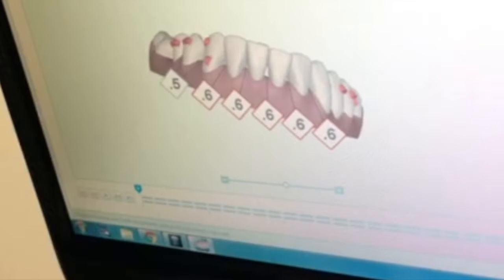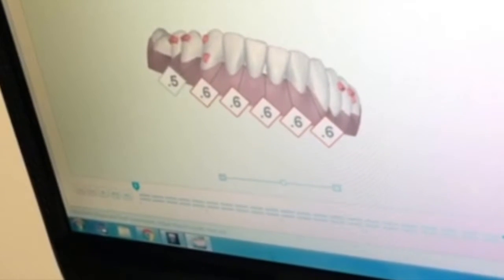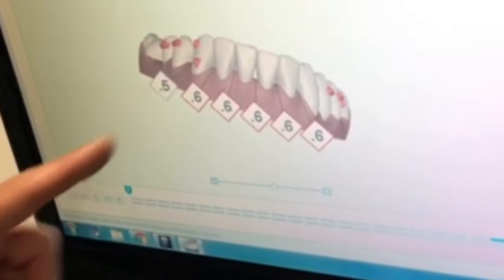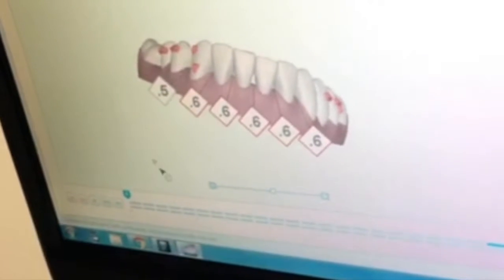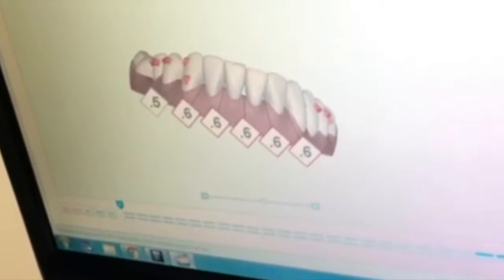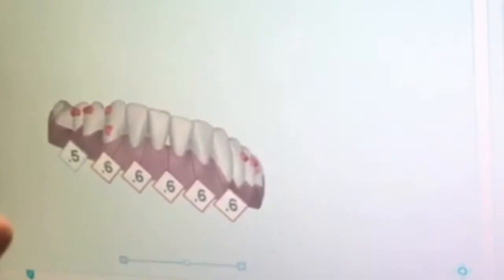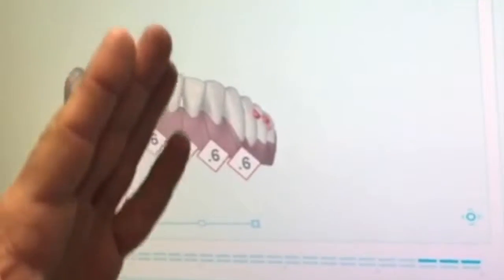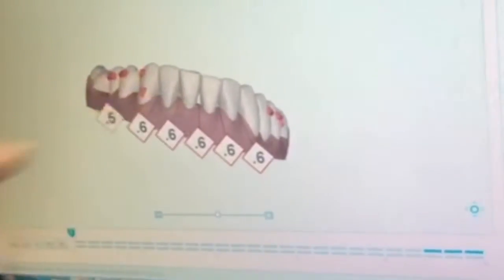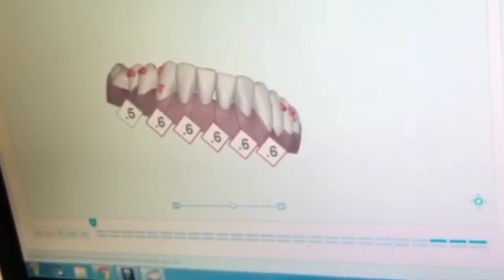So your IPR served two benefits. It created space, but also helped us to solve the aesthetic issue of having triangular spaces, which are also food traps in places where tartar can accumulate. So we were able to slenderize the tooth and bring the contact points longer and deeper down towards the gum so that we decrease that space.